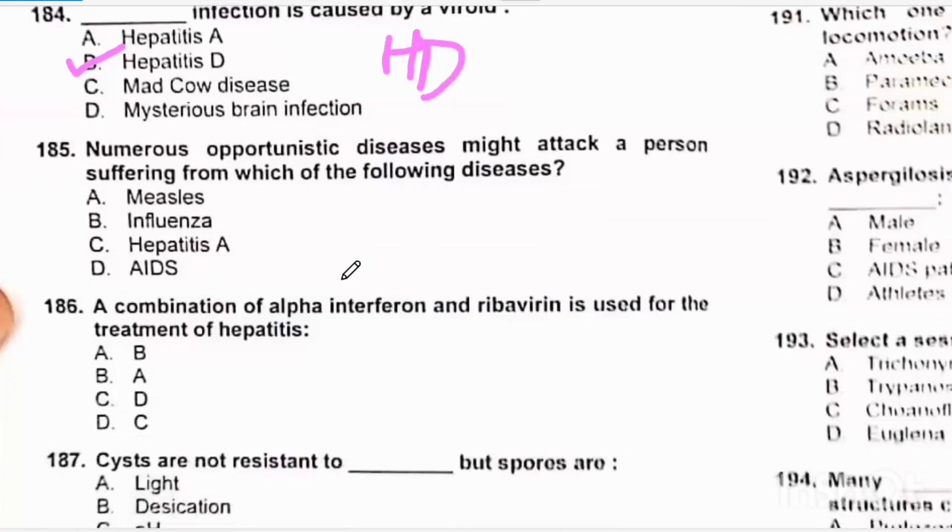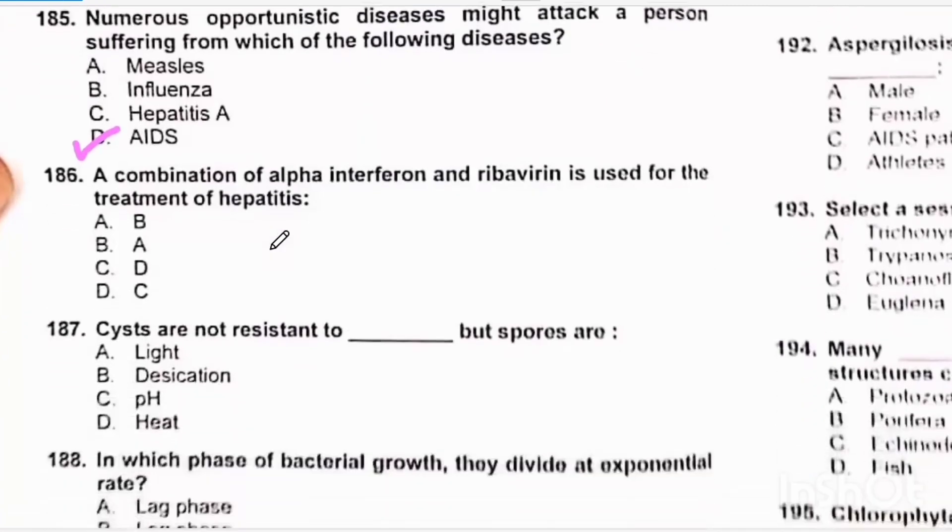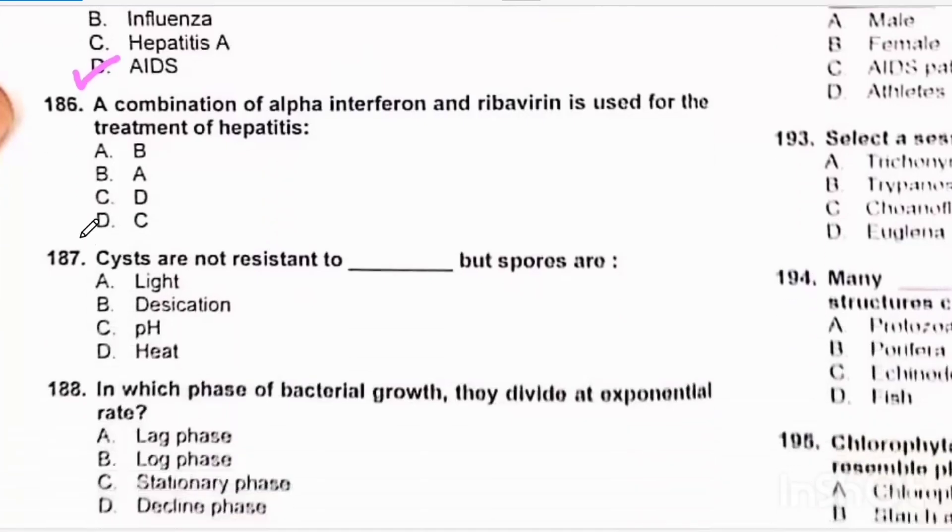Numerous opportunistic diseases might attack a person suffering from AIDS because the immune system is defective. A combination of alpha interferon and ribavirin is used for the treatment of hepatitis C.